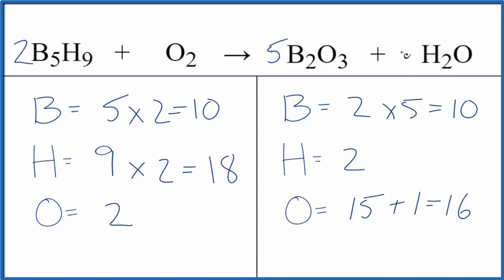Let's balance the hydrogens by putting a nine in front of the H2O. Two times nine, that's eighteen. We're good there. But again, we need to update the oxygens. So five times three, that's fifteen, plus nine times one. That gives us twenty-four.